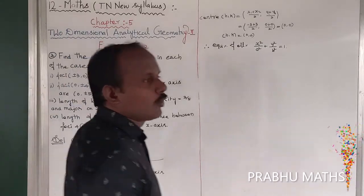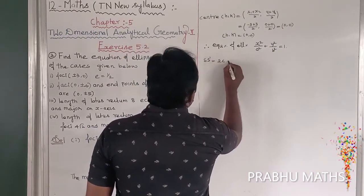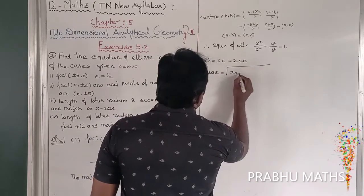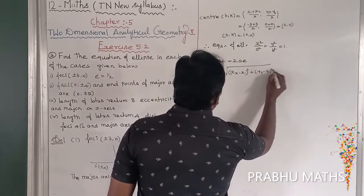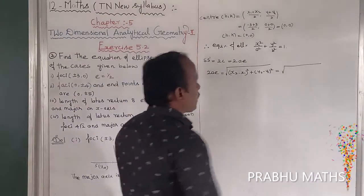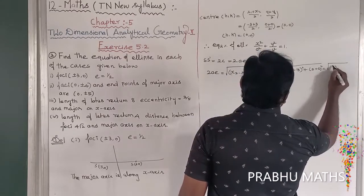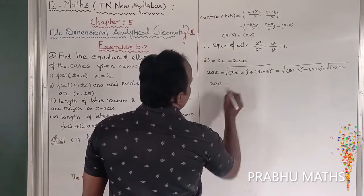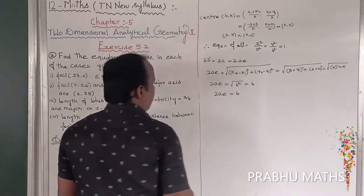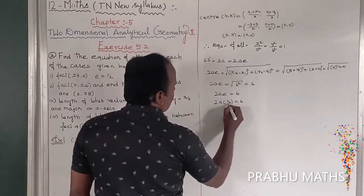Next, the distance of the foci. The distance SS' is equal to 2C. So 2C, with C replaced by aE, gives 2aE equal to the distance formula: root of (x2 minus x1) whole square plus (y2 minus y1) whole square. That is root of (3 plus 3) whole square plus (0 plus 0) whole square. So 3 plus 3 equals 6, and 2aE equals root of 6 squared, which equals 6. So 2aE equals 6. E is equal to 1 by 2 as given. So 2 into A into 1 by 2 equals 6; the 2 cancels, giving A equals 6.